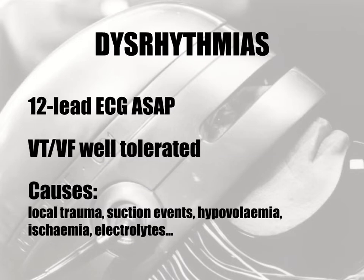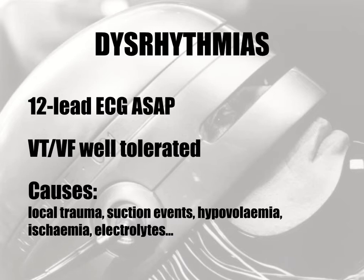Ventricular and atrial dysrhythmias are incredibly common in patients with VADs, typically occurring in up to 50% of patients. As mentioned in lecture 1, ventricular dysrhythmias are very well tolerated in these patients. There are many case reports documenting cases of conscious VF in patients with VADs. Dysrhythmias can occur for various reasons — including the significant underlying myocardial disease that led to VAD implantation in the first place.